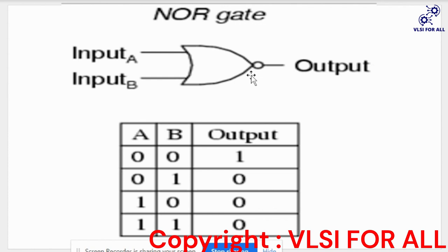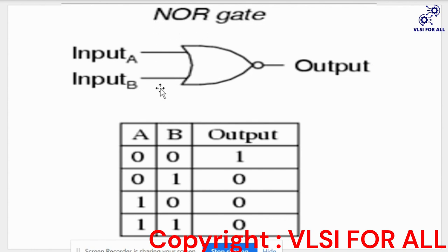That's why it is referred to as a universal logic gate. Coming to the behavior of the NOR gate: whenever the inputs of NOR gate are low, our output will become high. If any one of the inputs is high, then our output is low. NOR gate can contain many number of inputs but only a single output.